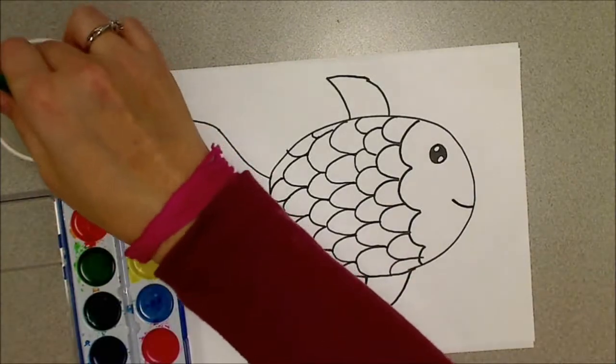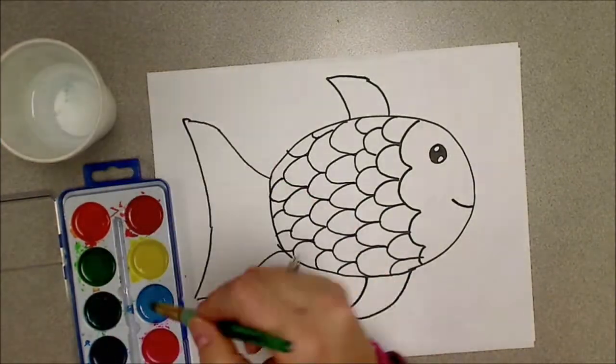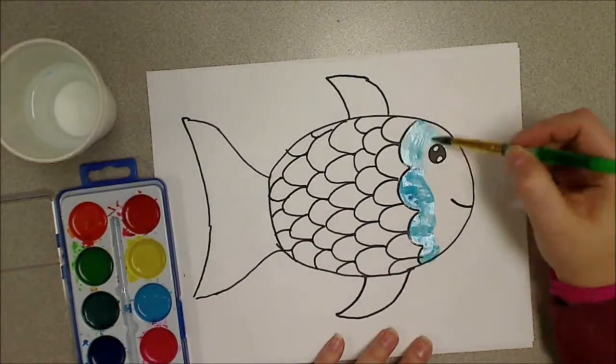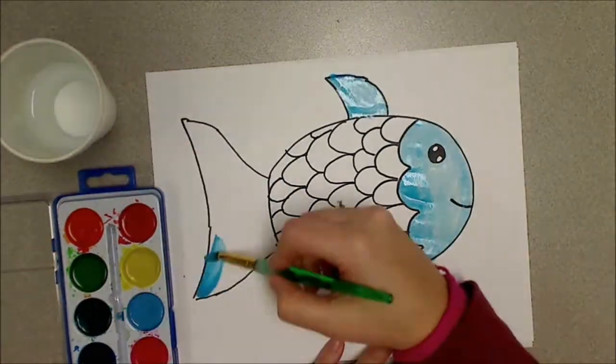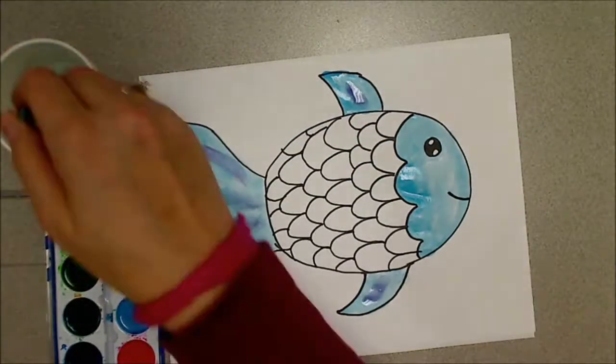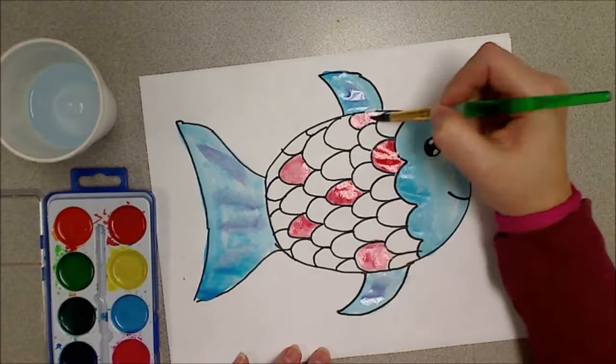All right, it's time to do some painting. See how I have a second piece of paper underneath so my paint doesn't go all the way through. I start off by painting the head, fins, and tail blue.